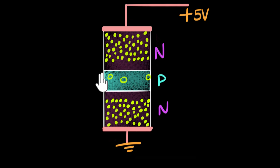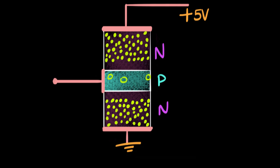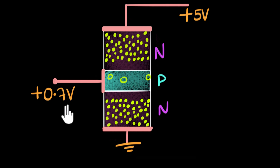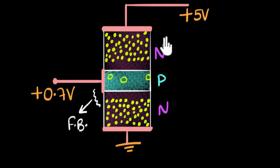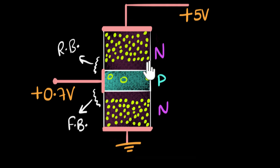Now if you really want a current, we could attach another terminal and put another circuit here. Say we apply a positive 0.7 volt to this terminal. Notice the P is connected to more positive than the N, which is grounded. As a result, we are forward biasing this junction. Similarly, if you look at the other junction, the N is connected to more positive than P, so this junction is reverse biased. When a PN junction is reverse biased, it doesn't allow the flow of majority charge carriers.